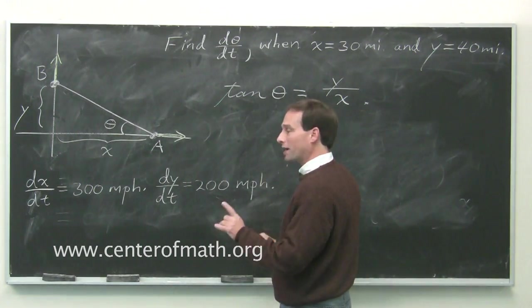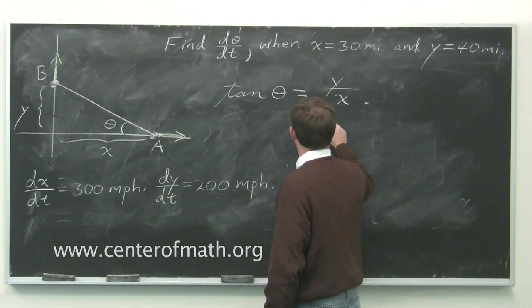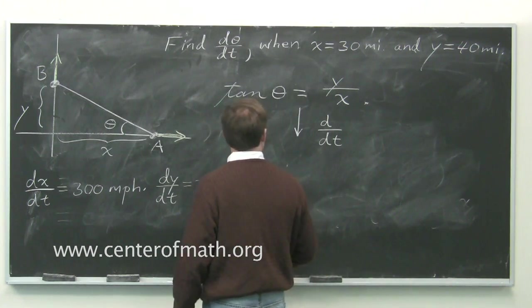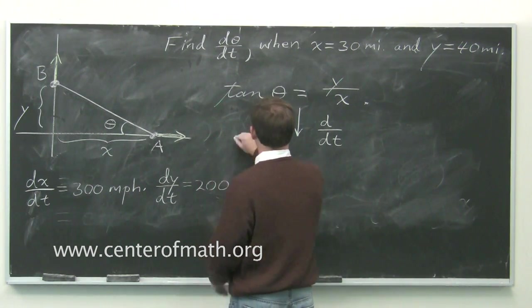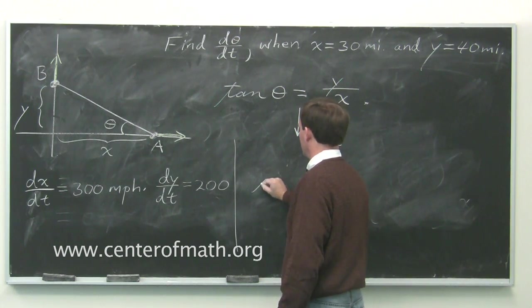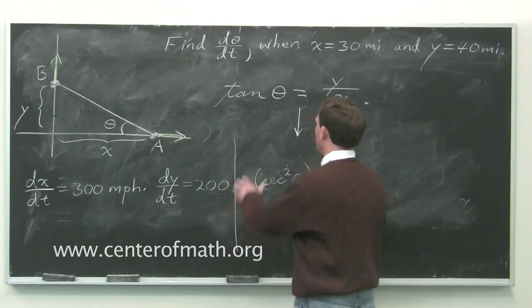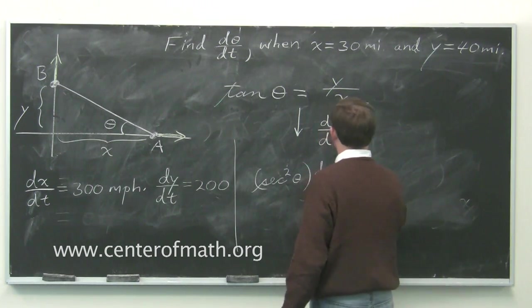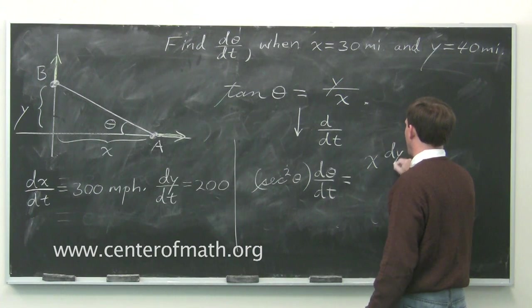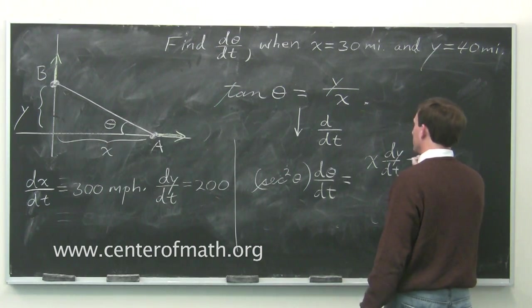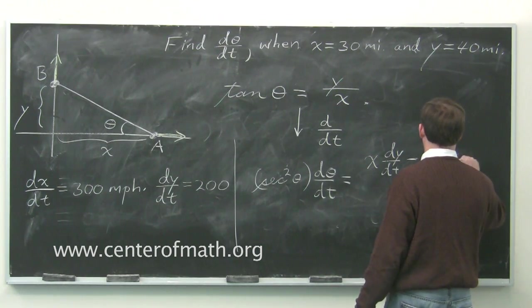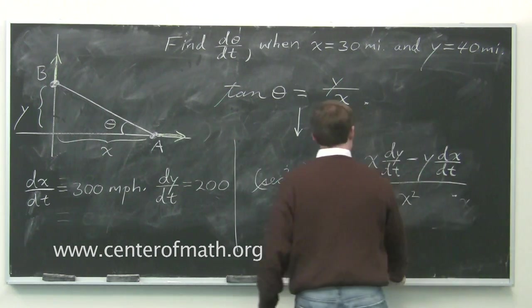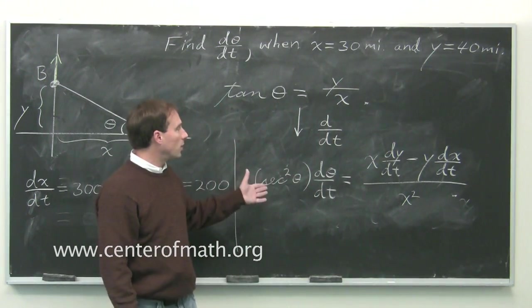The derivative of tan theta with respect to time. So, I'm going from here to here by differentiating with respect to time t. You'll get derivative of tangent, secant squared theta. But times the derivative of the inside stuff. So, times d theta/dt equals. And now it's the bottom times the derivative of the top. Always with respect to t. The bottom times the derivative of the top. Minus the top times the derivative of the bottom. All over the bottom squared. So, you get this relationship between d theta/dt, dx/dt, and dy/dt.